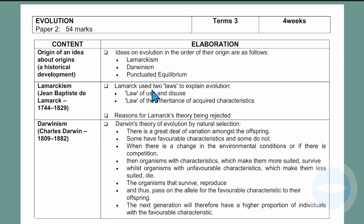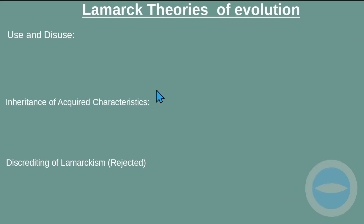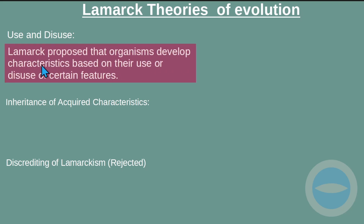Lamarck's theory is divided into two laws. Law number one is the law of use and disuse, and law number two is the law of inheritance of acquired characteristics. I will also explain the reason for Lamarck's theory being rejected. Let's start with Lamarck's theory of evolution — specifically, use and disuse. Lamarck proposed that organisms develop characteristics based on their use or disuse of a certain feature.